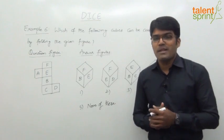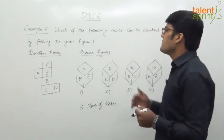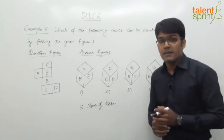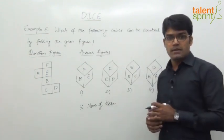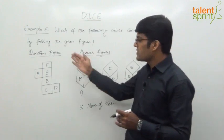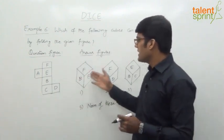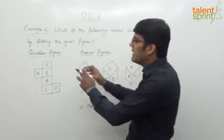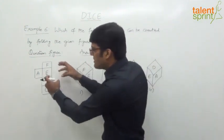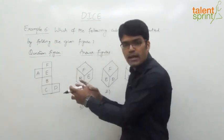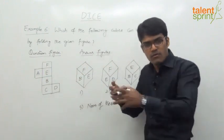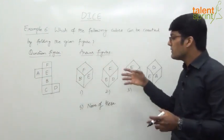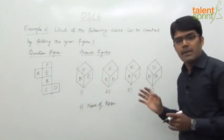Example 6 from the topic of dice. The question asks: which of the following cubes can be created by folding the given figure? There is a question figure and there are answer figures. We have to find out that when this question figure is folded in the form of a cube, which of these would be obtained.